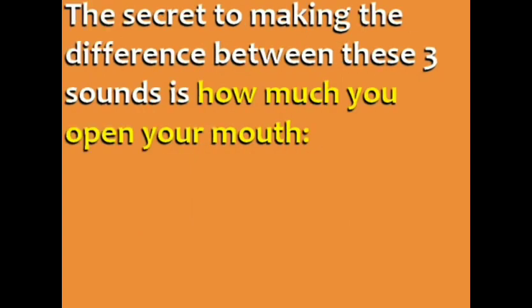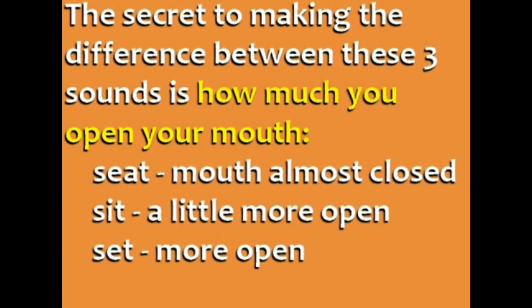The secret to making the difference between these three sounds is how much you open your mouth. For the ee sound in seat, your mouth is almost closed. For the ih sound in sit, your mouth is a little more open. And for the eh sound in set, your mouth is even more open.